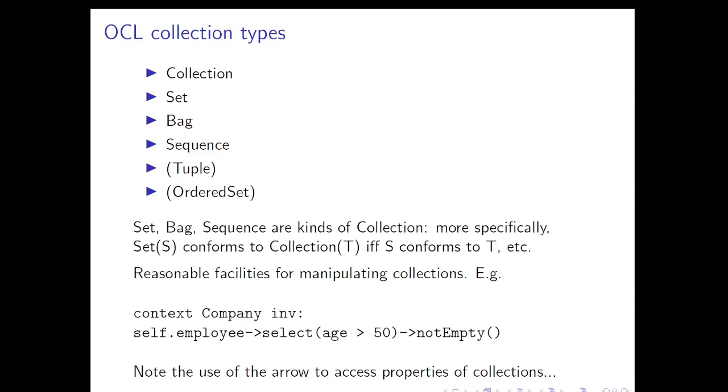OCL gives us reasonable facilities for manipulating collections. Here's an example. We can have an invariant on class Company and we can say self.employee->select(age > 50)->notEmpty(). Let's read that carefully. The arrow indicates that we're accessing properties of collections. So when you see an arrow in OCL, it means that the thing to the left of the operation is to be interpreted as a collection. So self.employee is a collection. In this case, we're not saying that class Company has an attribute employee. We're talking probably about Company being linked, having an association to another class, perhaps Employee. Then self.employee is the collection of all objects of that class to which self is linked. If you remember, in some lab we talked about properties. There's actually very little difference between an attribute of collection type and a collection of linked objects.